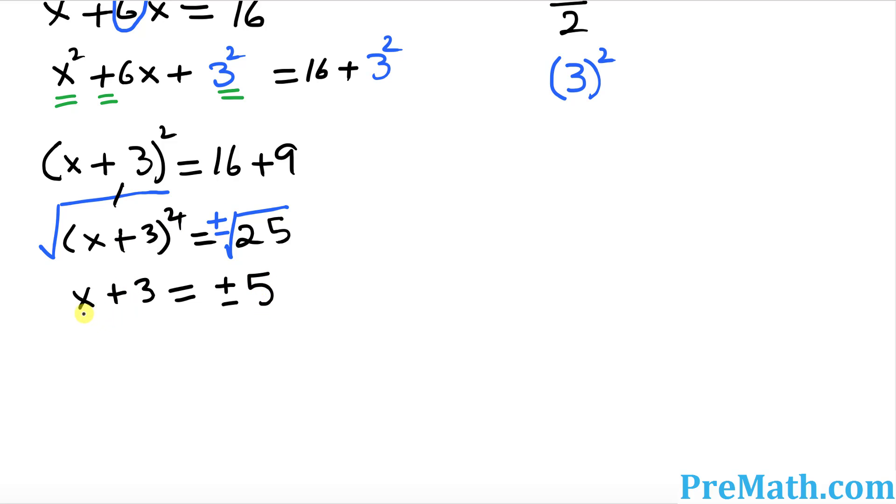Now we must isolate x. I'm gonna put negative 3 to get rid of this 3, and also put negative 3 on this side as well. This cancels out so you got x equal to plus or minus 5 minus 3.